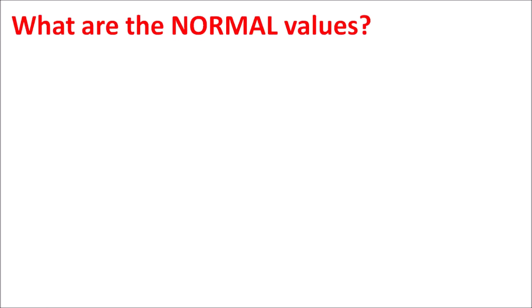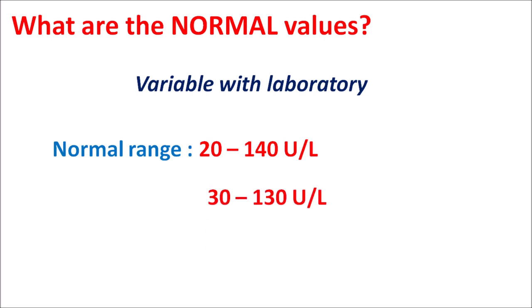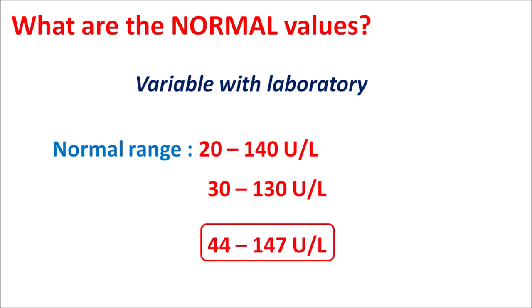What are the normal values? Normal values are variable with laboratory conditions. The normal range of ALP is considered from 20 to 140 units per liter, but in some laboratories the normal values are taken from 30 to 130 units per liter, and still other references use 44 to 147 units per liter as the reference range for ALP levels.